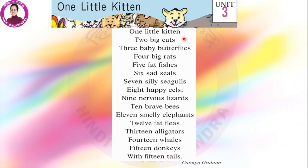Now you all know what these numbers are — one, two, three, four, five, six till fifteen. Now what are these animals? Let's see them and how they look.